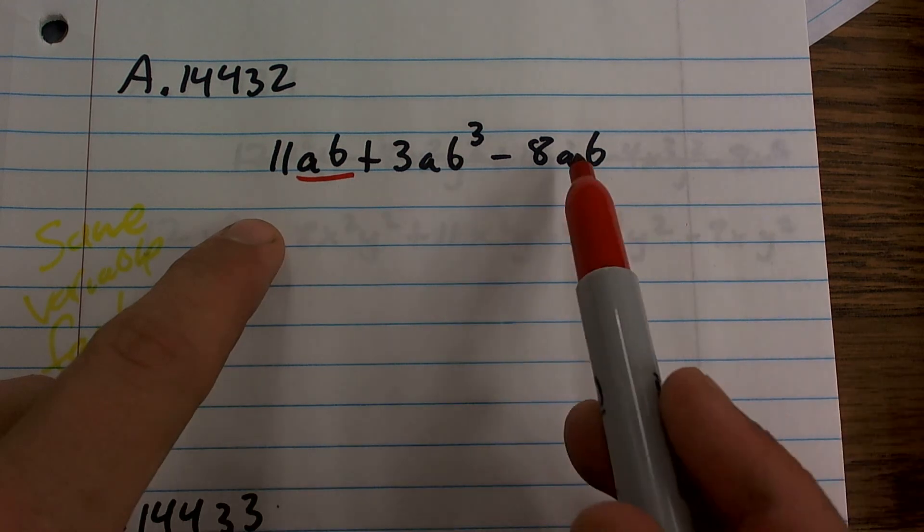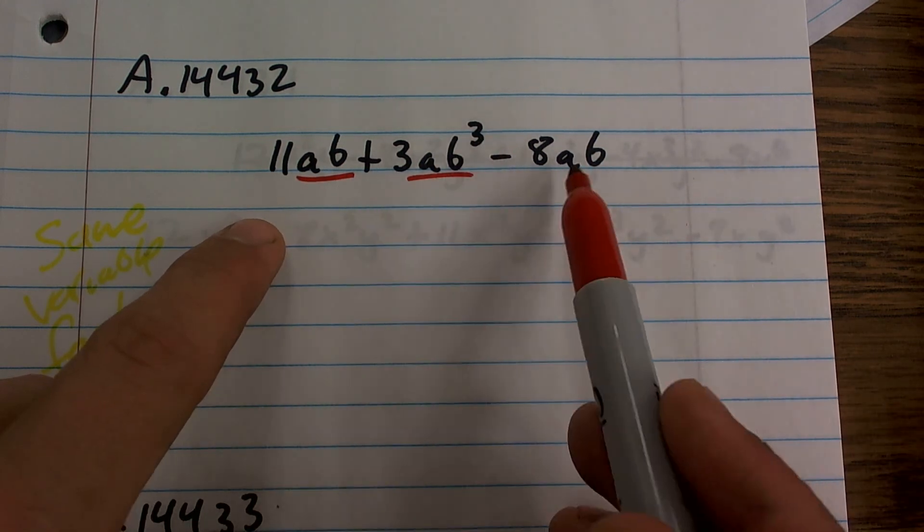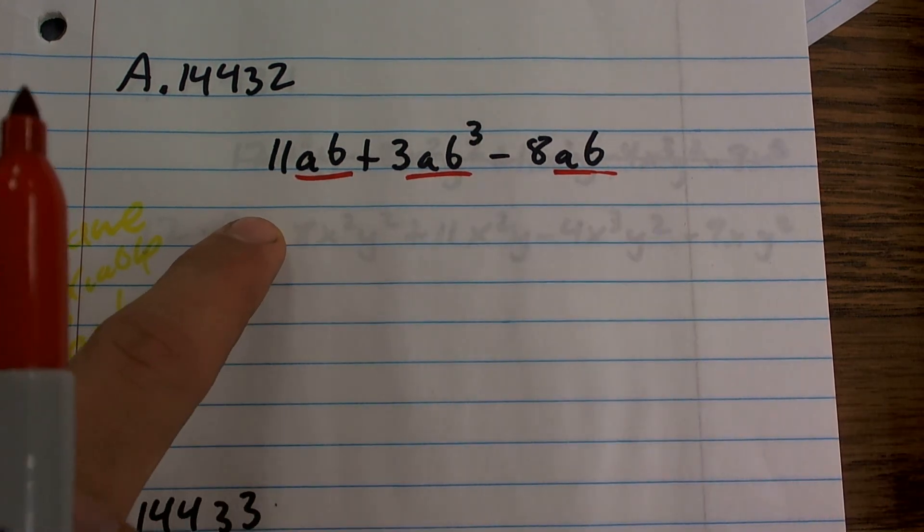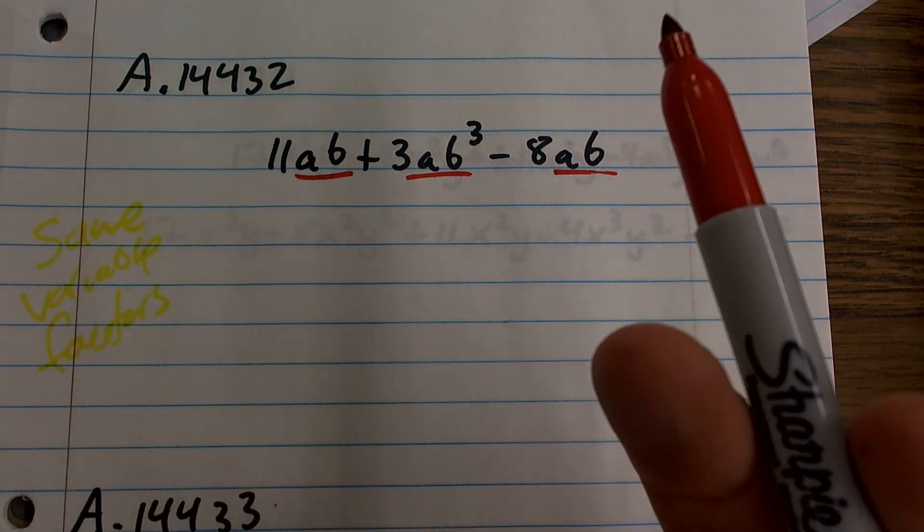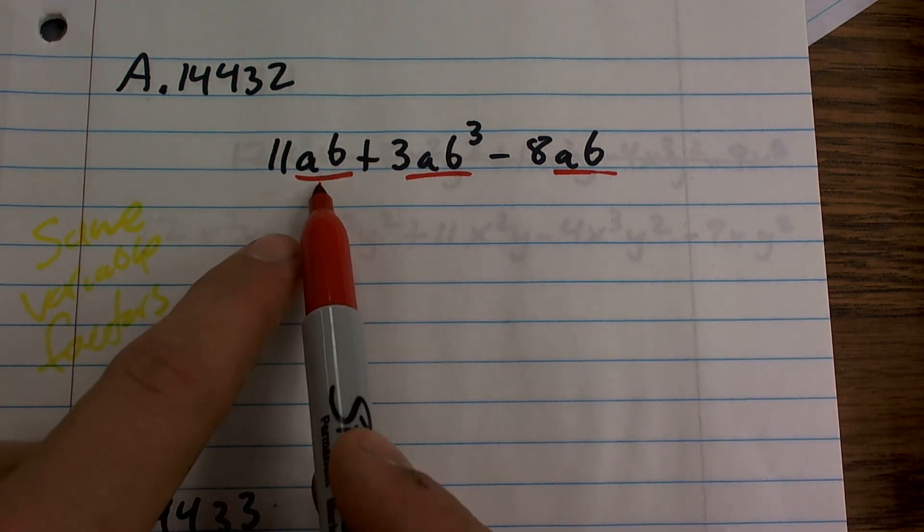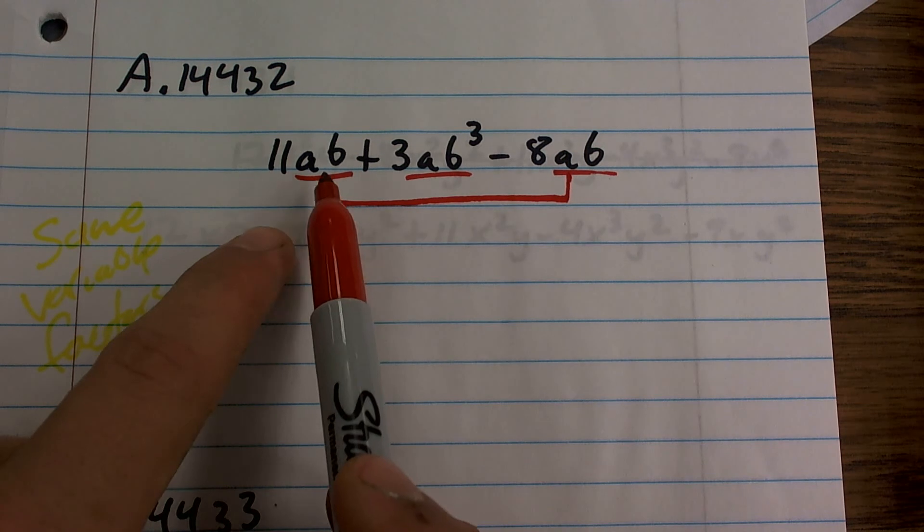Here I have AB. Here I have AB cubed. And here I have AB. So remember the factors are what you're multiplying by. Well, the only two that are the same are AB and AB.